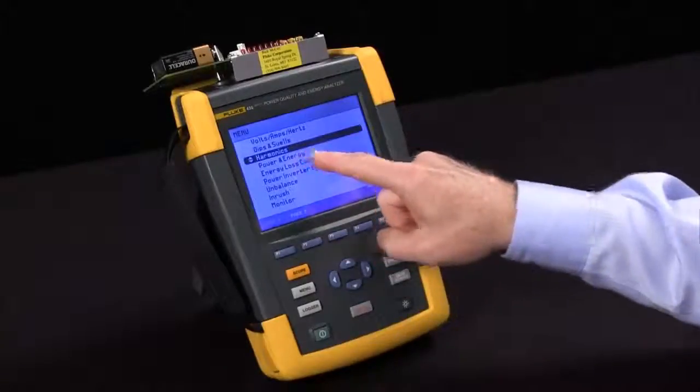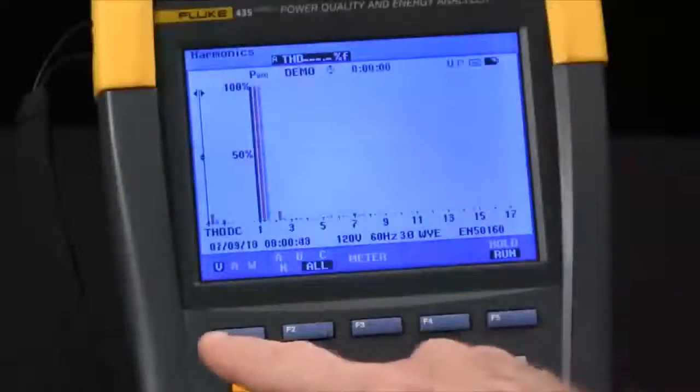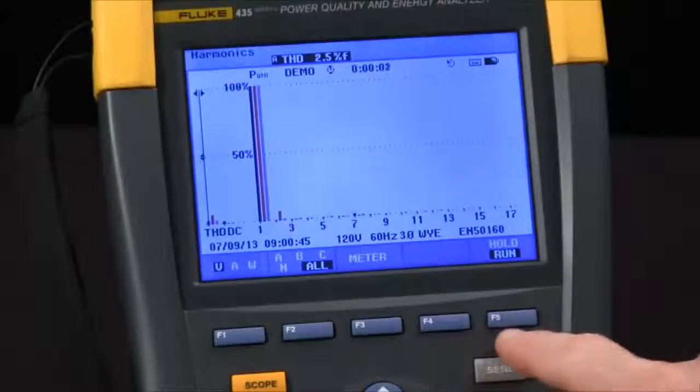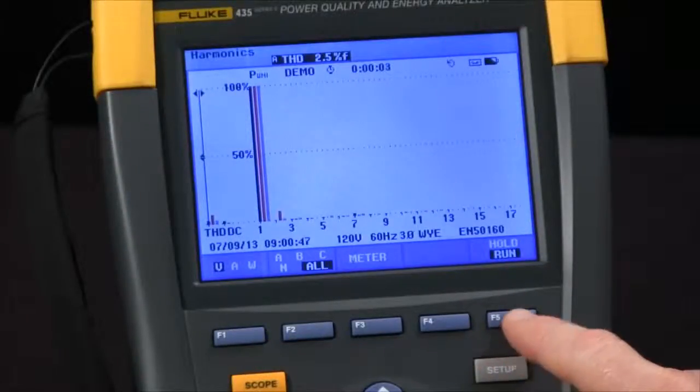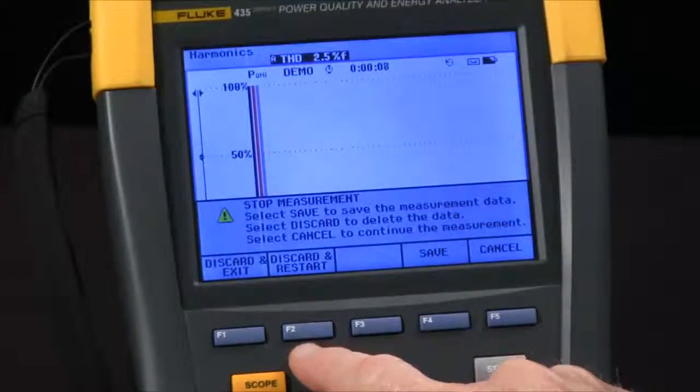Let's highlight harmonics and press OK to start the test. I'm going to immediately stop this test with the hold run button, F5, say discard and restart.